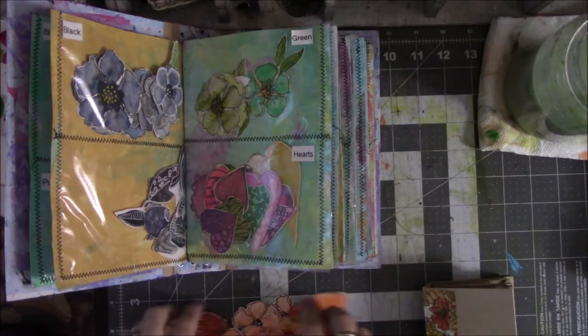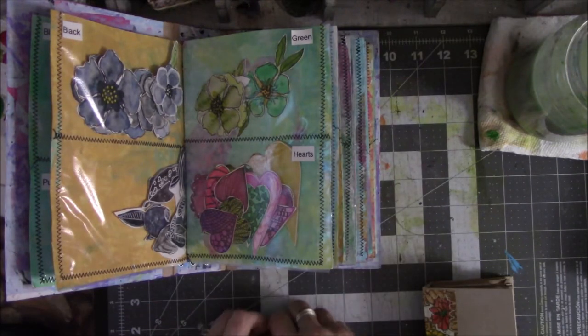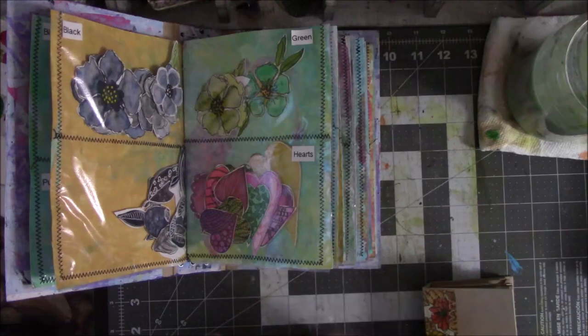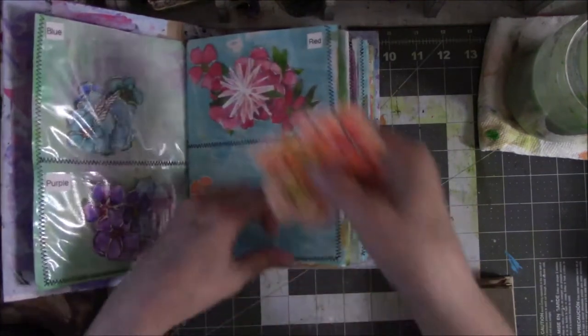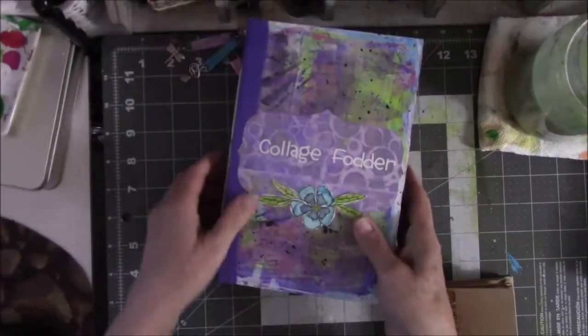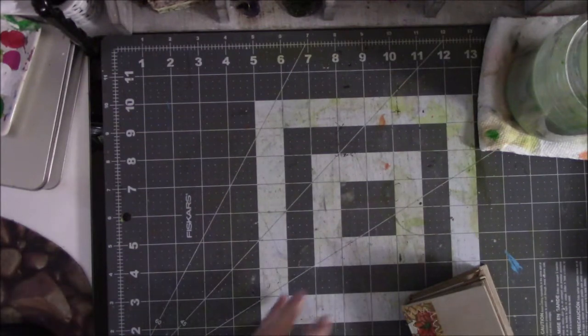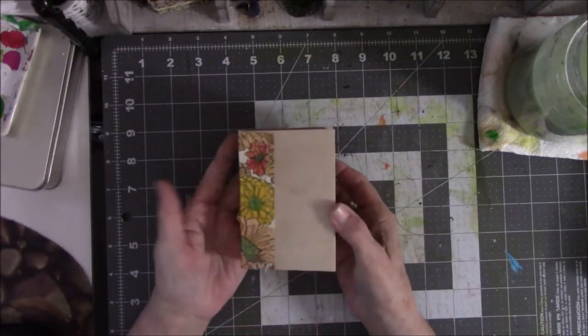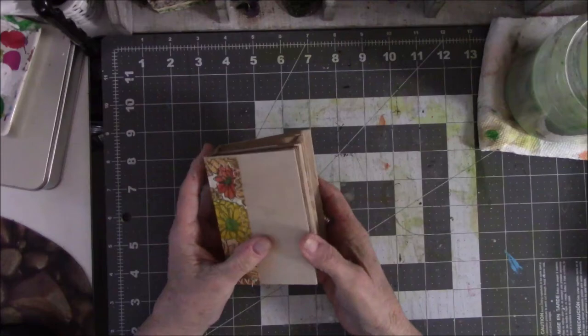Right now I'm looking through my fodder book to look for an embellishment to put on the front of the little book that I created for the ATCs. Since I like making books, this is right up my alley.